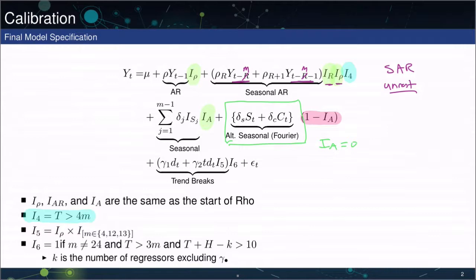And finally, the final part of the model are these so-called trend breaks. You see we have this variable trend breaks, which is i6. i6 is going to be 1 under a few assumptions. M not 24, that's fine. That's obviously something you get with hourly seasonality on a daily basis. t greater than 3m, again assuming we have a large enough sample. And finally, t plus h minus k, where k is the number of parameters of the model excluding gamma, greater than 10. So in other words, if I have enough data, then I'm going to include this trend break.